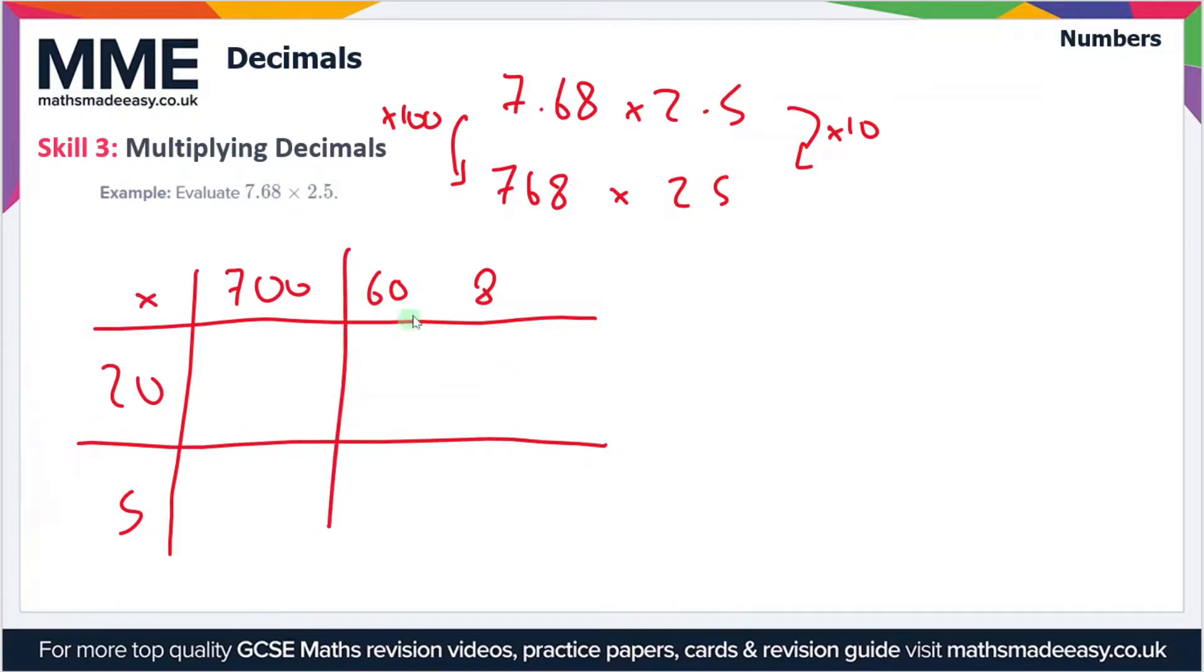So 20 times 700, 2 times 7 is 14, we just add the zeros back in, so it's three zeros. 5 times 700 is 3500. 20 times 60, 2 times 6 is 12, add the zeros back in. 5 times 60 is 300.